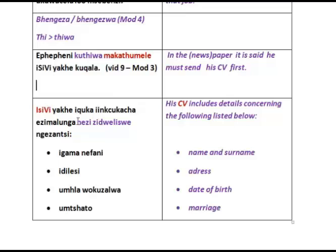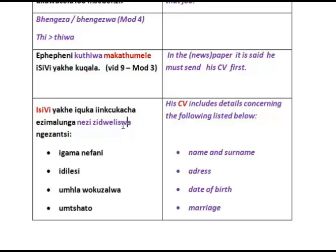'Ebuka' includes 'inkukata,' an important item of vocabulary. 'Ezi malunga,' meaning concerning — 'malunga na' is normally followed by 'na.' 'Dweleisa' would be to list, 'dweleiswa' to be listed — another example of what will be explained in module 4.